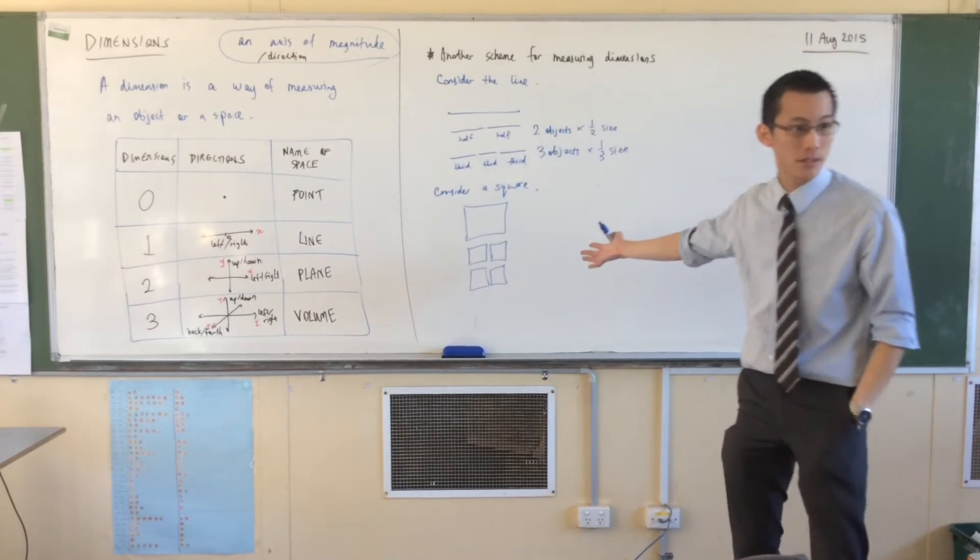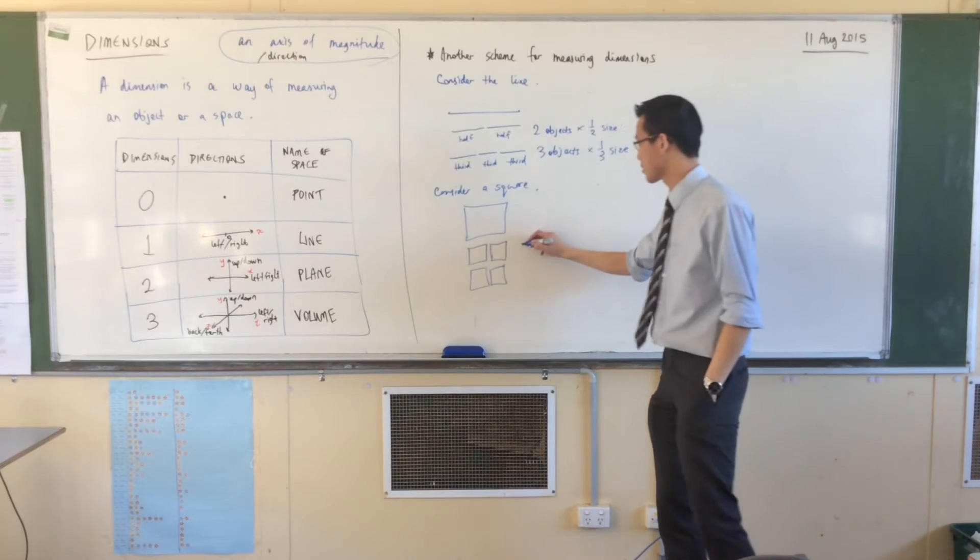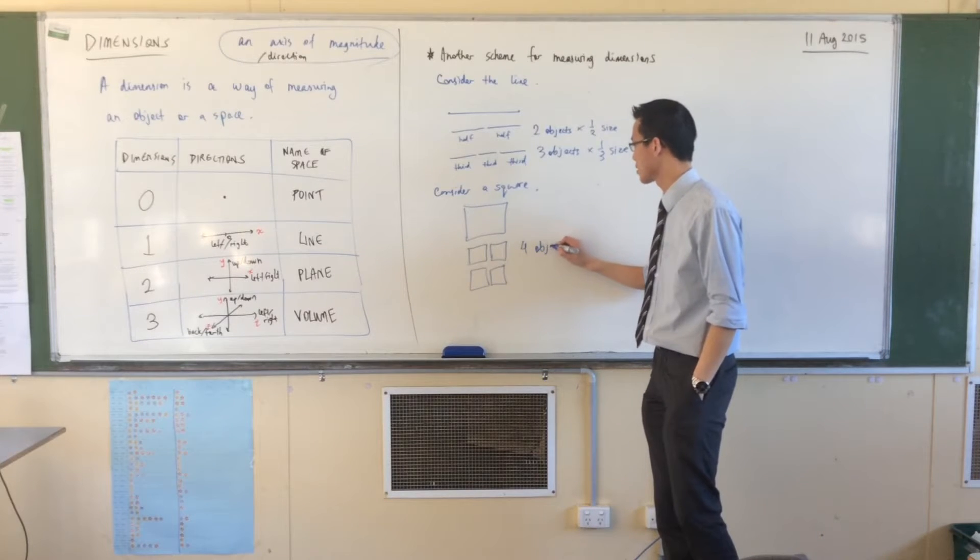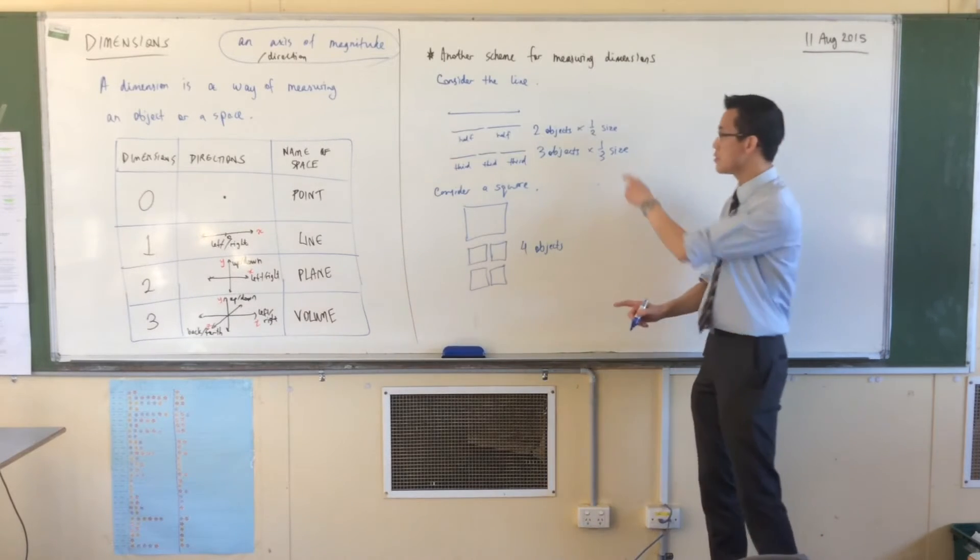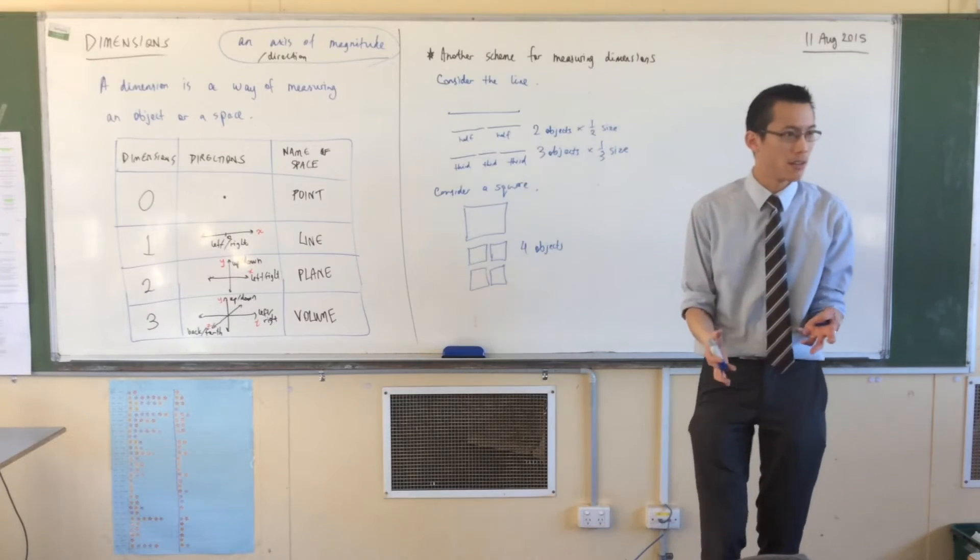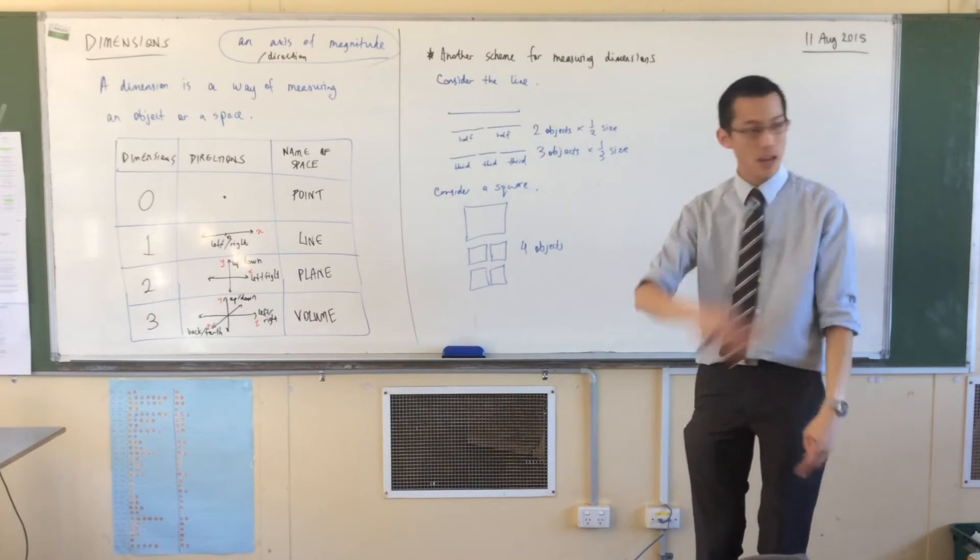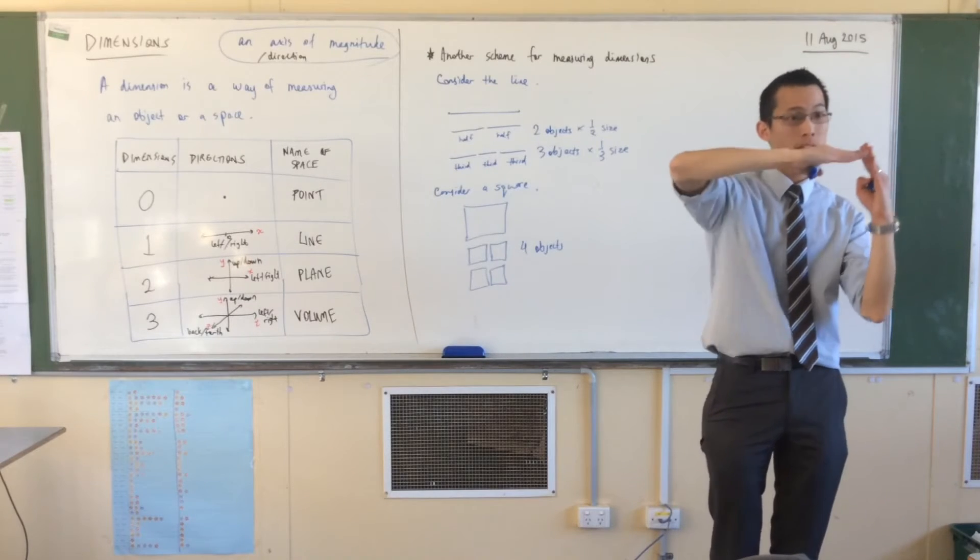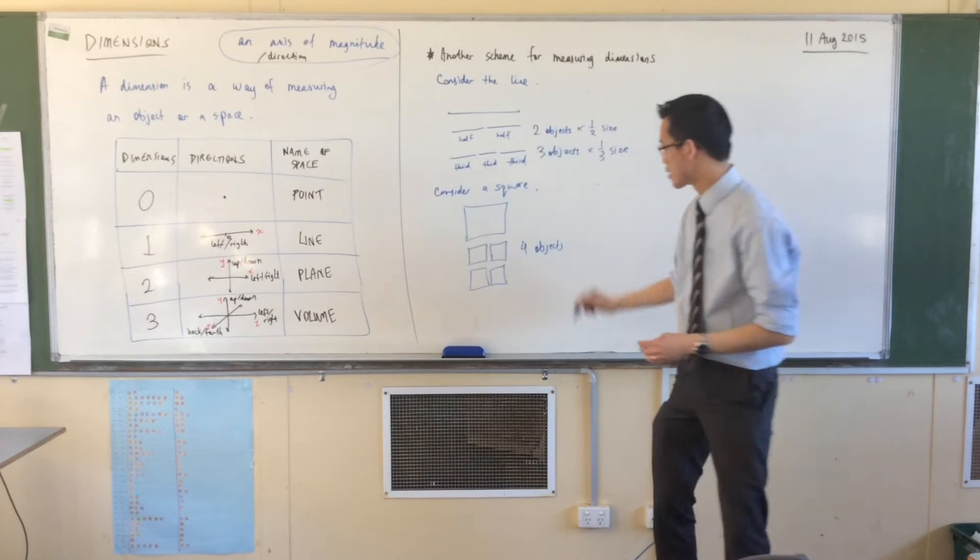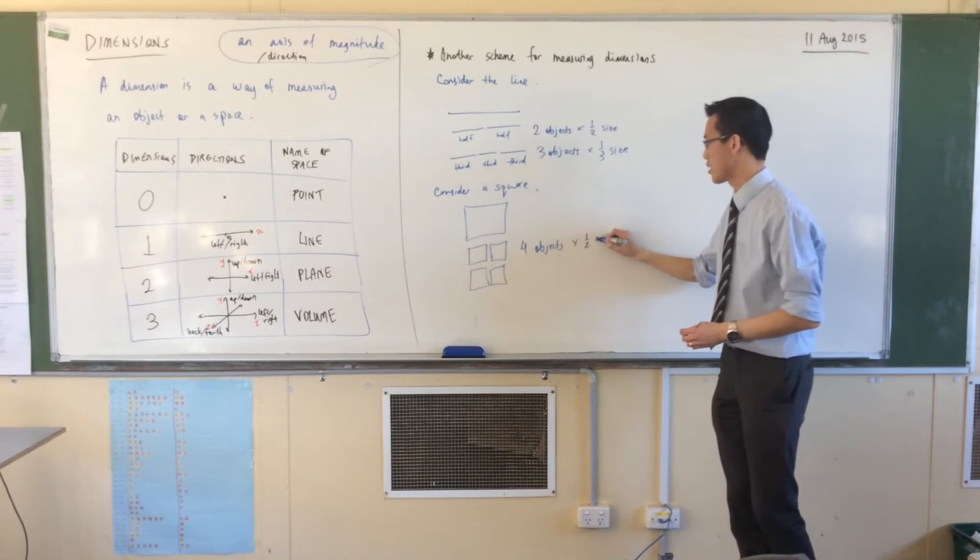Four objects. Now, keep in mind, I'm using the word size. I don't mean area, right? Because these are not half the area. They're half the size, by which I mean each of the dimensions, length and width, have been halved.